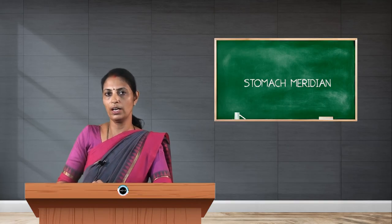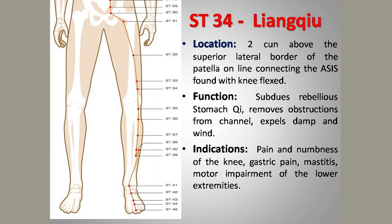Stomach 34, the xi-cleft point, is used in acute disorders of the stomach such as gastritis, burning abdomen, belching, or fullness of the abdomen. Needling is 1 to 2 cun straight. Its location is 2 cun above the superior border of the patella on the outer aspect of the leg.